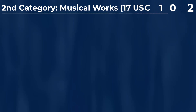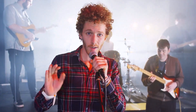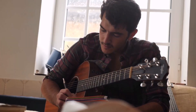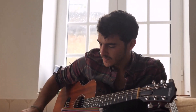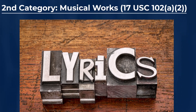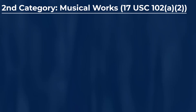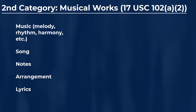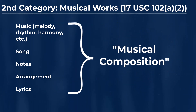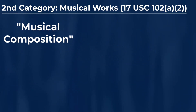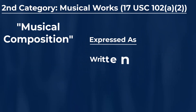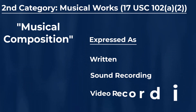The second category of creative works that can generally be protected by U.S. copyrights is for musical works, including any accompanying words or lyrics. Things like music, songs, the musical notes, their arrangement, and the lyrics of a song are all aspects of a musical work capable of being protected by U.S. copyrights. We often sum up these various aspects — the notes, arrangement, and lyrics — by the term "musical composition." Musical compositions may exist in different forms: written form, sound recording form, and/or video recorded form.